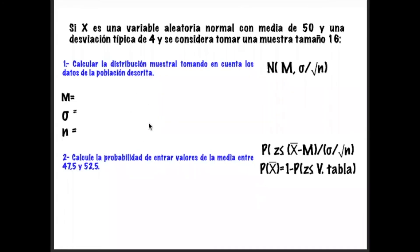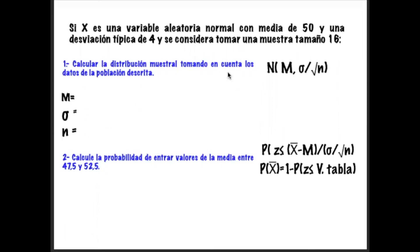Aquí empezamos con nuestro segundo ejemplo del cálculo de distribución muestral y cálculo de probabilidad para un intervalo de medias con un muestreo determinado. Nos dicen que X es una variable aleatoria normal con una media de 50 y una desviación típica de 4, y se considera tomar una muestra de tamaño 16.